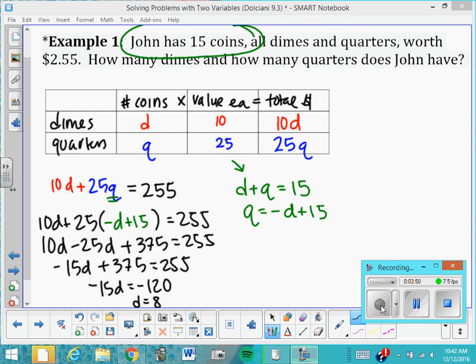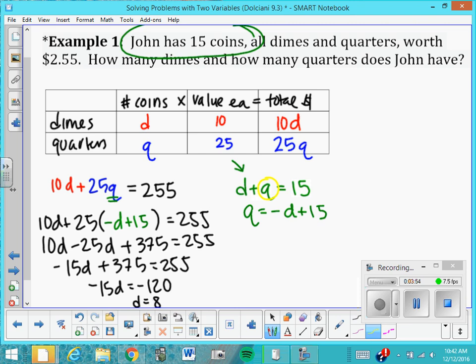Okay, so yours might look a little different depending on what you solved for. I chose to solve for the q here, just sort of randomly, and I got negative d plus 15, which you can see that I substituted in place of the q over here, and then solved. And then what I got for my answer was d equals 8, so that means he's got 8 dimes, and then just come back up here to this problem, and say 8 plus what equals 15, and so that must mean he has 7 quarters.